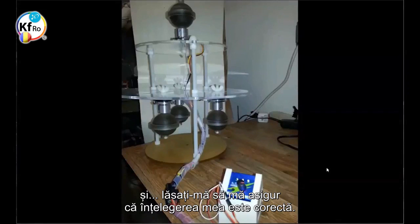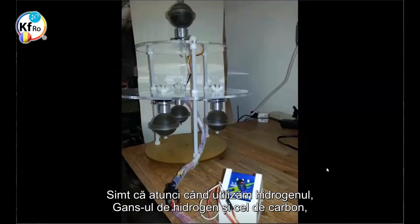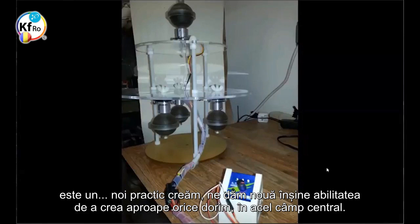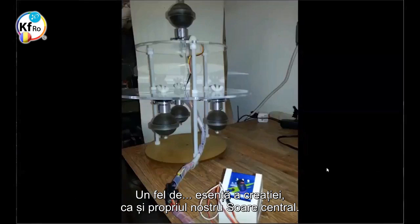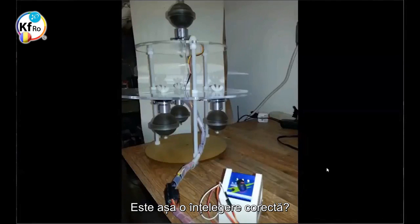And we've been practicing with these now. We have a couple of them going in our facility. Let me make sure that my understanding is correct. My feeling is that when we use the hydrogen, the hydrogen GANS and the carbon GANS, we are giving ourselves the ability to create almost anything that we want in that center field. Kind of the essence of creation, kind of like our own central Sun. Not just energy as in the Sun giving out, but the ability to create more. Is that a correct understanding?